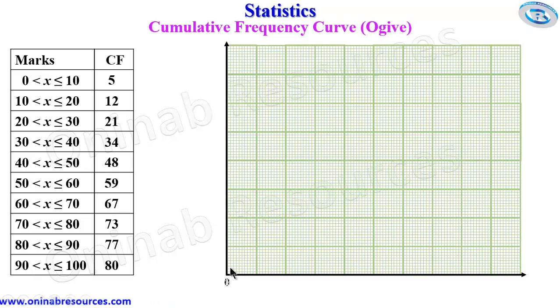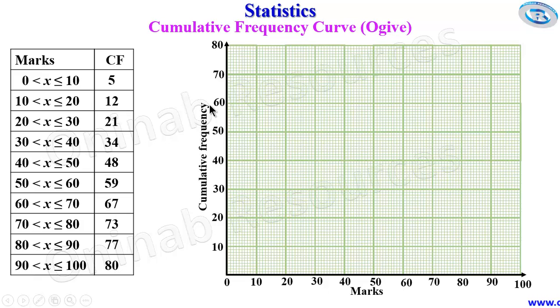It is going to be 0, 10, 20, 30, 40, 50, 60, 70, 80, 90, and 100. This is representing the marks. And here up, we go with 10, 20, 30, 40, 50, 60, 70, 80, representing the cumulative frequency. We have the marks here and the cumulative frequency here.